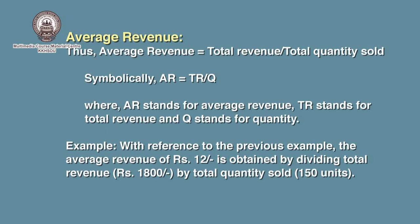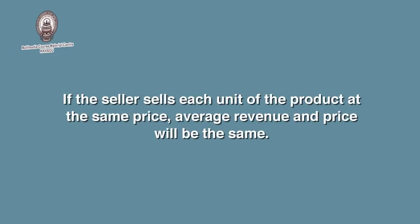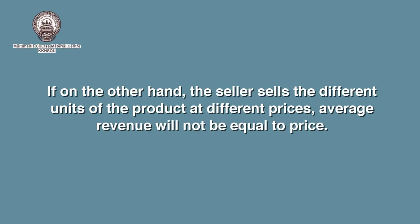When we divide rupees 1800 by 150 units sold, we get rupees 12, which is the average revenue. Please note that average revenue and price may or may not be the same. If the seller sells each unit of the product at the same price, average revenue and price will be the same. On the other hand, if the seller sells different units of the product at different prices, average revenue will not be equal to price.